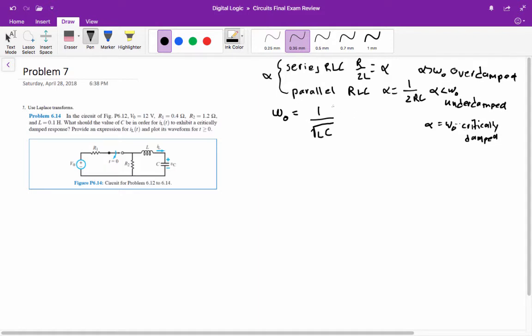We're supposed to find out the value of the capacitor in order for us to have a critically damped response. So we need alpha to equal omega-naught, and this was a series RLC, so we need R over 2L to equal 1 over the square root of LC. R over 2L, so that's 1.2 over 2 times 0.1 equals 1 over the square root of 0.1 times C.